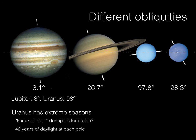It may have been a gradual tidal shift that brought the rings and moons into this knocked-over position along with the planet. One consequence of Uranus's extreme obliquity is that it leads to extreme seasonal changes. The axial tilt is the reason for the seasons, and Uranus has the most extreme seasons of all. The sun remains more or less over one of the poles for approximately 42 years, then you get 42 years of daylight at the other pole — meaning 42 years of darkness on either side. It's very different than anything we'd experience on Earth.